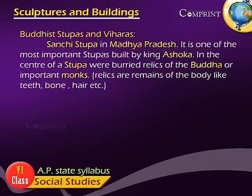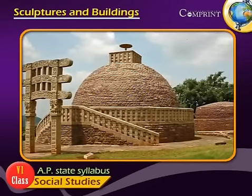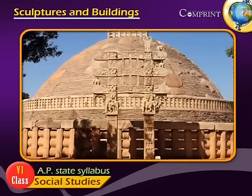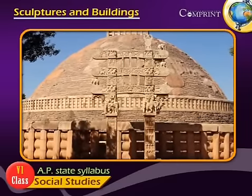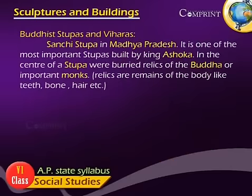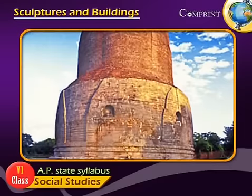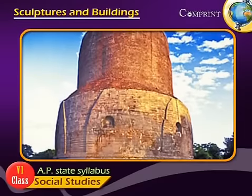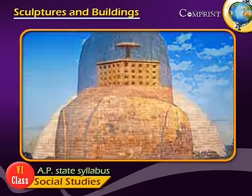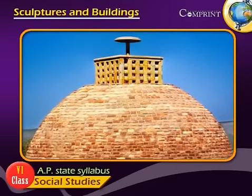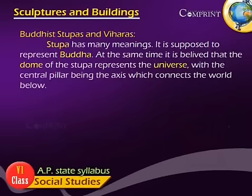Sanchi Stupa in Madhya Pradesh is one of the most important stupas built by King Ashoka. In the center of a stupa were buried relics of the Buddha or important monks. A stupa has many meanings — it is supposed to represent Buddha, and the dome of the stupa represents the universe, with the central pillar being the axis connecting the world below.